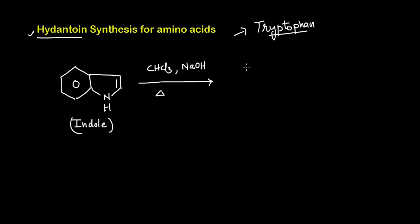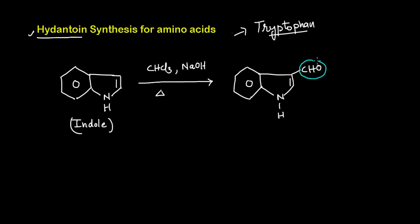So this is what happens. The reaction will convert it into Indole-3-Carboxaldehyde. The Indole at the third position will be changed to give the CHO group. This Aromatic Aldehyde is formed by reacting the Indole with Chloroform and NaOH. This is Indole-3-Carboxaldehyde.